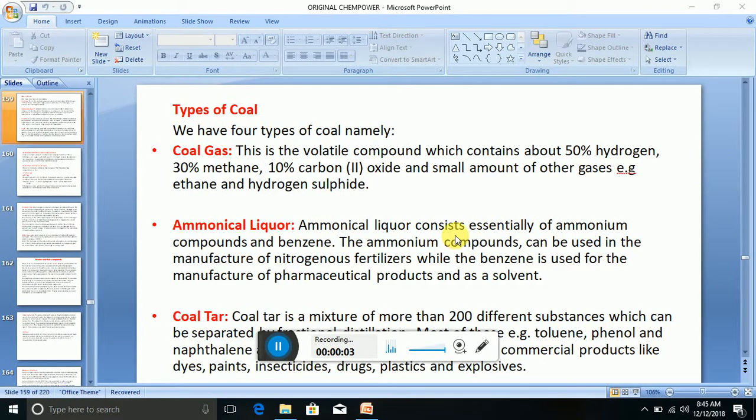Hello, welcome. Let's look at types of coal. We have four types of coal, namely coal gas. This is the volatile compound which contains about 50% hydrogen, 30% methane, 10% carbon 2 oxide, and small amounts of other gases like ethane and hydrogen sulfide.